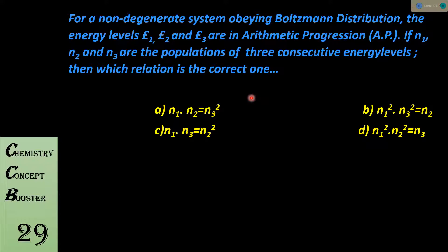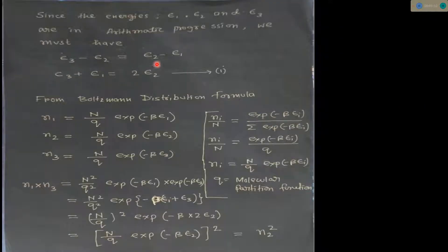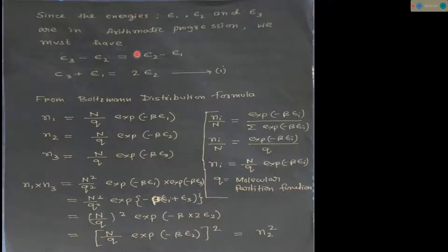Let's discuss the answer. Since the energy levels ε1, ε2, and ε3 are in arithmetic progression, we can write ε3 minus ε2 equal to ε2 minus ε1. This is the property of arithmetic progressions: if three numbers a, b, c are in AP, then c minus b equals b minus a.